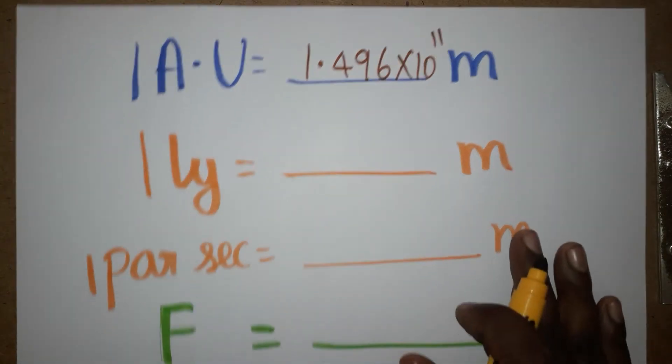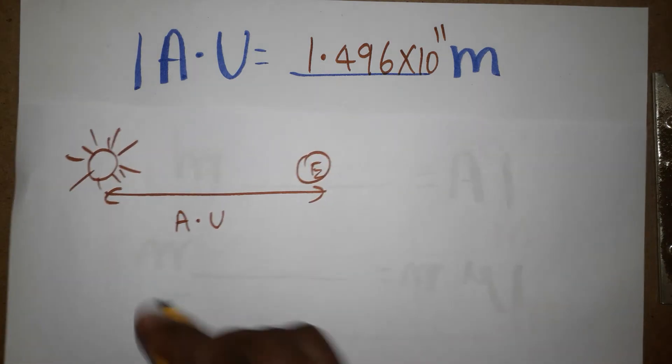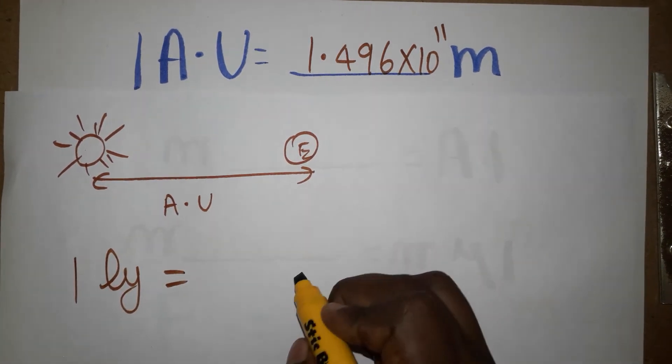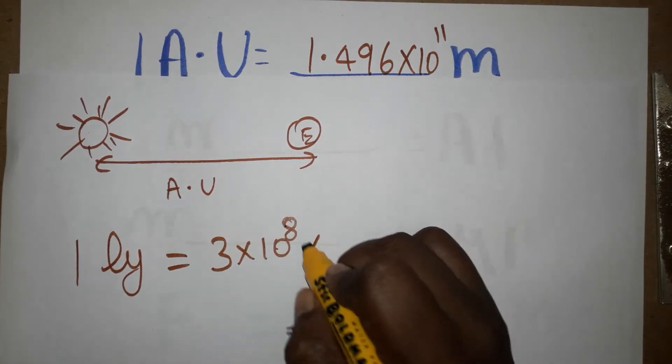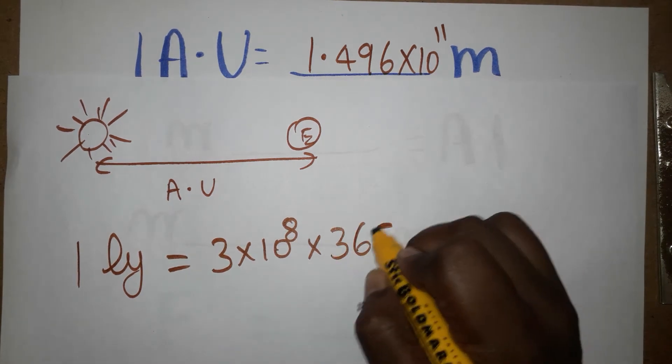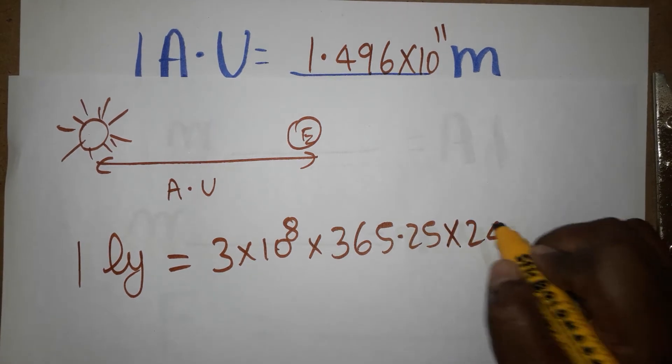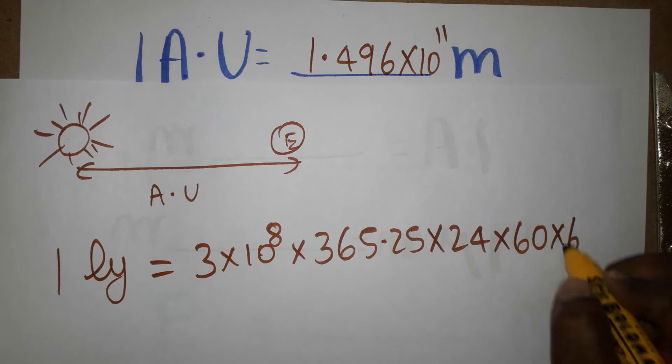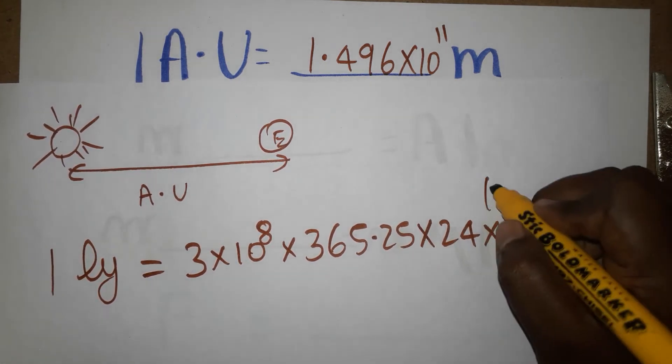The next thing, one light year is equal to dash meter. One light year is the distance light travels in one year. We know velocity of light is 3 into 10 power 8 meter per second. So one light year means one year is 365.25 days. One day is 24 hours, one hour is 60 minutes, one minute is 60 seconds.